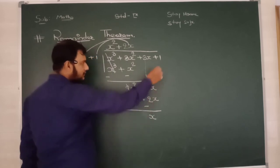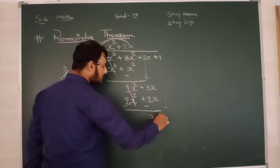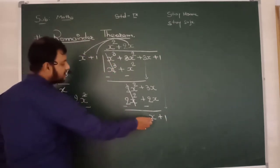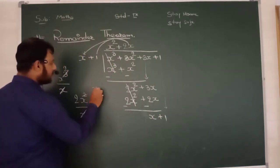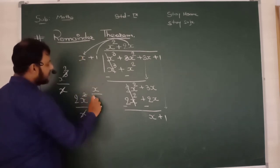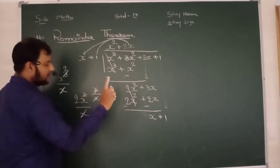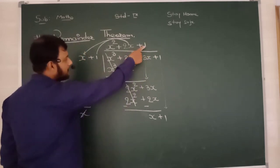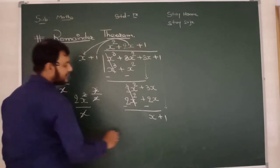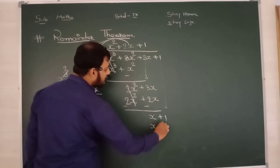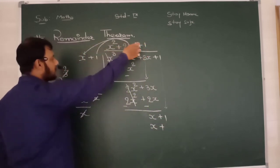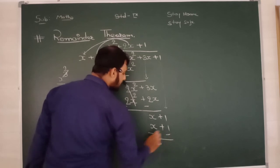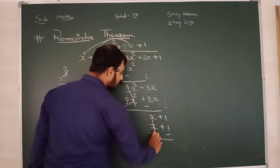Plus 1 multiply with x, that is x. Plus 1 multiply with 1, that is also 1. Negative, negative: 0, 0. DS friends, reminder is 0.